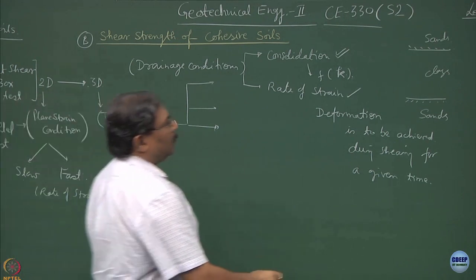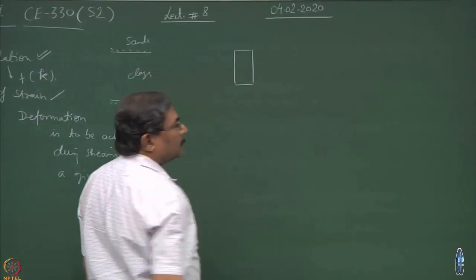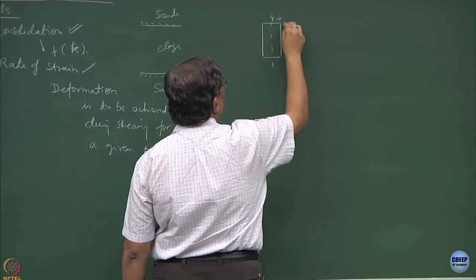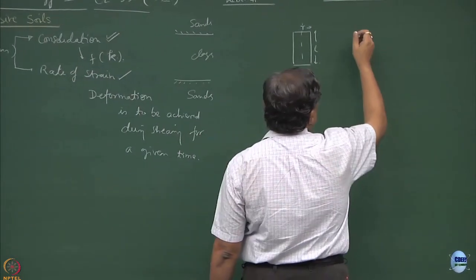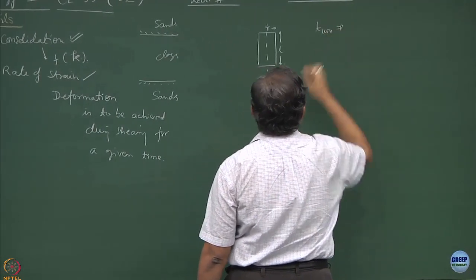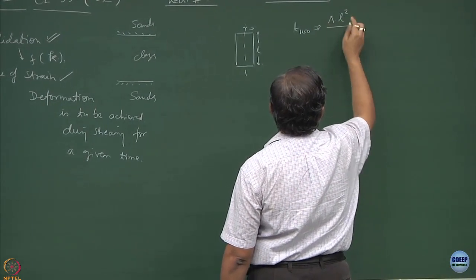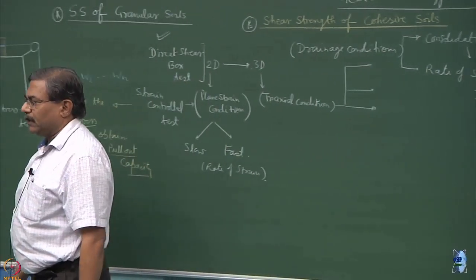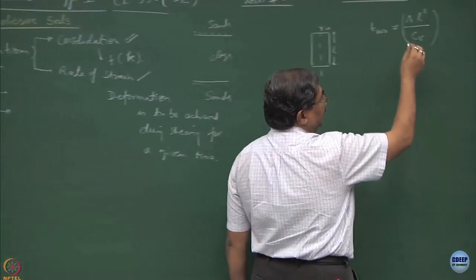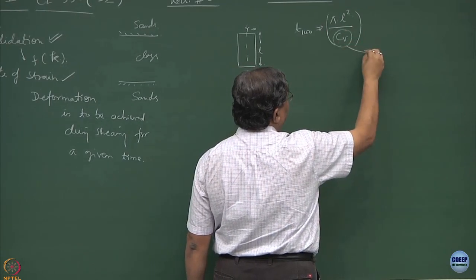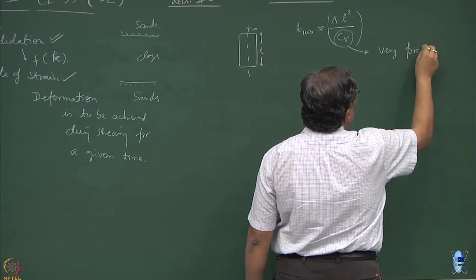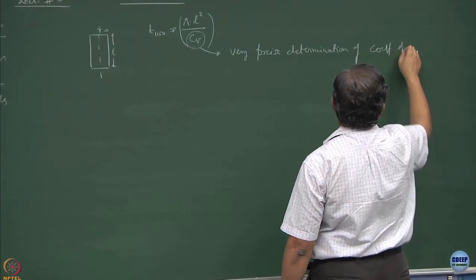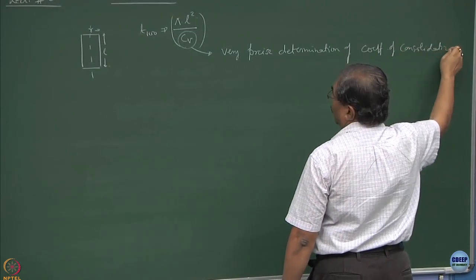Rate of strain can be obtained by if I know how much deformation I have to give to the sample in how much time. So suppose if I say a certain amount of deformation is to be achieved during shearing for a given time. So the question is how I am going to obtain the time. A typical triaxial sample would look like a cylindrical sample where this is the radius of the triaxial sample and this is the length. There are some vertical relationships which are available and what is normally used is that T100 equal to pi L square upon CV, this is what is known as Bishop's equation.